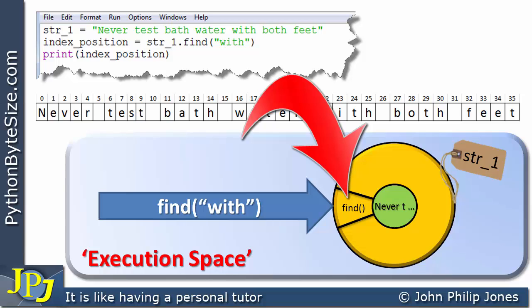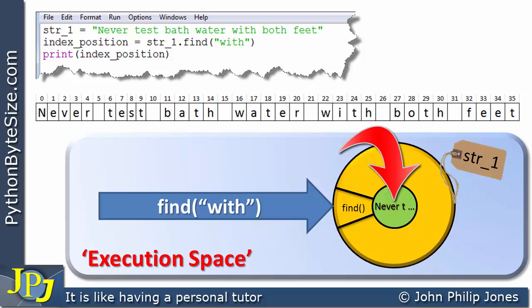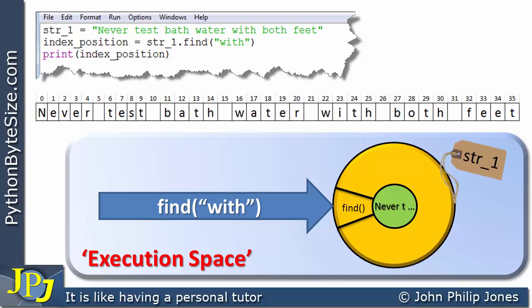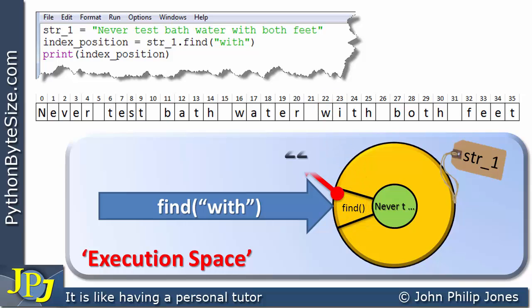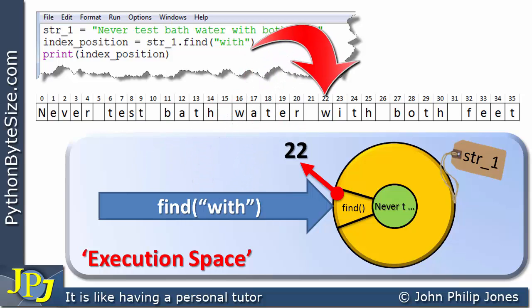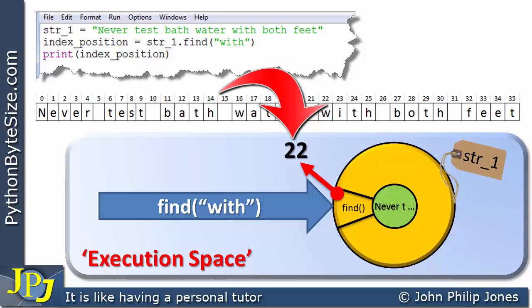What this method is going to do is look at this string, which we can see better illustrated here. Consequently we're going to be looking to see where 'with' is, and we can see it is here. Most importantly, we can see it is starting at index position 22. So what this find method does is actually produce the number 22 because that's the index — that's where the 'with' string starts, at index position 22.